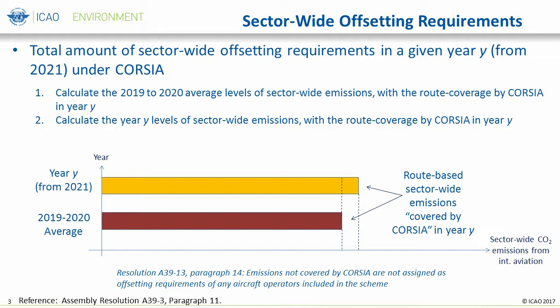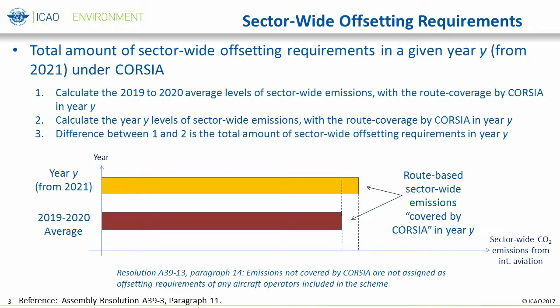Let's take a look at the graph on this slide to help explain the sector-wide offsetting requirements. Note that the year is on the vertical axis and the emissions are represented on the horizontal axis. International emissions are expected to grow from year to year. This is represented by the yellow bar, which indicates the amount of CO2 emissions from international aviation based on the CORSIA route coverage in year Y. The bottom bar, in red, indicates the average levels of sector-wide emissions in 2019-2020, based on the CORSIA route coverage in year Y. The difference between these two bars is the increase of sector-wide emissions above the baseline level, which corresponds to the total amount of offsetting requirements for year Y.